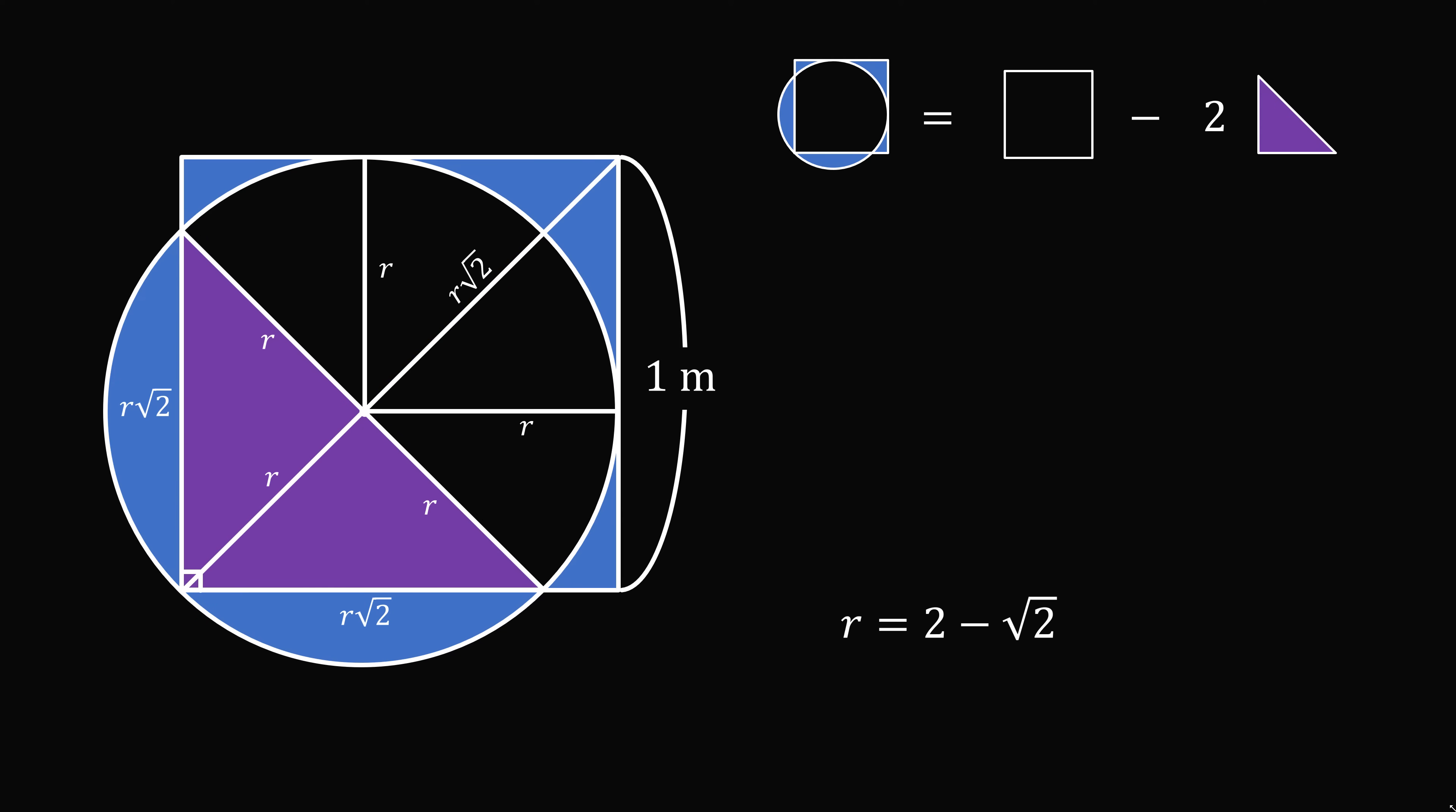The area of the square is equal to one squared. The area of the triangle will be r root two multiplied by r root two all over two. This simplifies to be r squared. We substitute these in. So the area we want is one minus two r squared. We've solved for r already. So we substitute in. We then just carefully need to simplify. And we get the answer of eight root two minus eleven square meters.